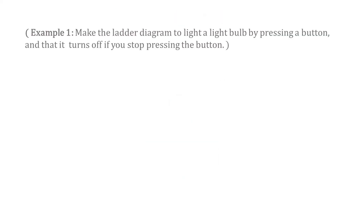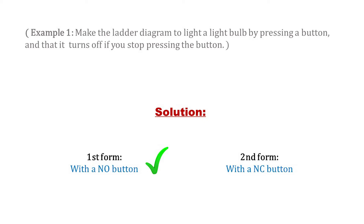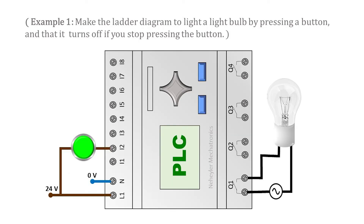Example 1: make the ladder diagram to turn on a light bulb when you press a button, and turn it off if you stop pressing the button. The ladder diagram could be made in several ways depending on how the physical inputs are considered. If the button is considered as normally open: the normally open button is connected on one side to 24 volts and on the other to the PLC input I2. The bulb is connected to the Q1 output of the PLC. The Q1 output only acts as an electrical switch, similar to a relay, opening or closing the bulb circuit.